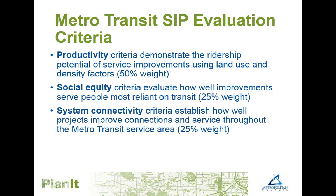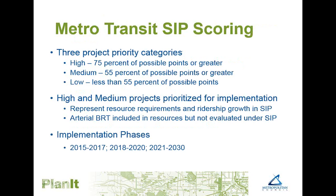Three main categories of evaluation measures were determined to help review and prioritize specific service improvements. The direction laid out by the Met Council in Thrive MSP 2040, strategies in the 2040 TPP, and the results of stakeholder outreach shaped the evaluation measures and weighting. They work together as a system to emphasize productivity, ensure social equity, and provide access to the entire region. Based on the evaluation criteria, projects were sorted into three categories — high, medium, or low — with high or medium projects prioritized for implementation. Arterial BRT projects are not evaluated under the SIP criteria because they have been prioritized and evaluated in a past study.